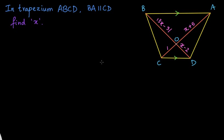Hello everyone. In this video, we are given a trapezium ABCD where the opposite sides BA and CD are parallel to each other. We are given the lengths OA, OB, OC, and OD in terms of X. We have to find the value of X.